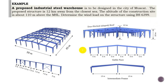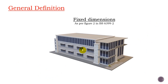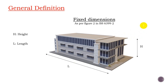Before starting to solve the example, I want to make sure you have a proper introduction and general definitions regarding the characteristics of wind action and the code we are using — BS6399 Part 2. First of all, for this building we have what are called the fixed dimensions: the height, the length, and the width. No matter what direction the wind is coming from, these remain constant — they are fixed.